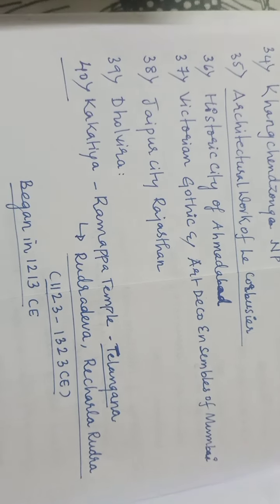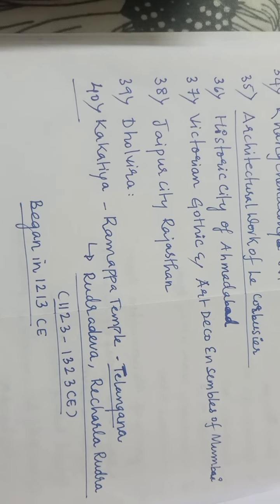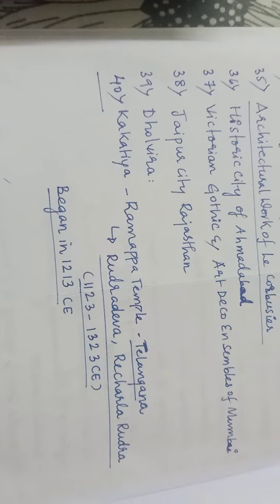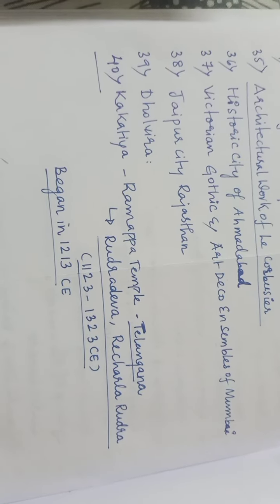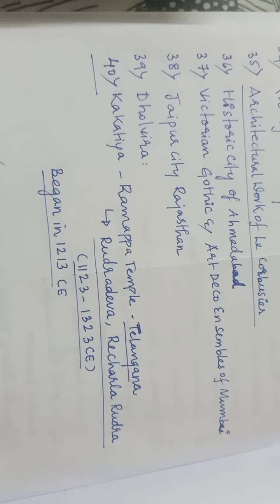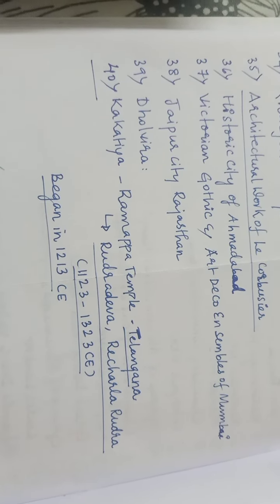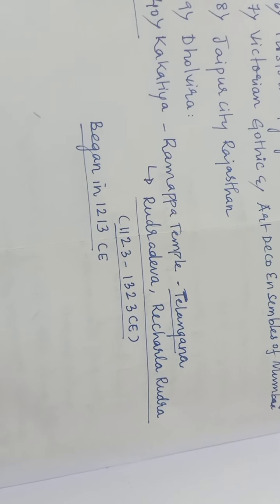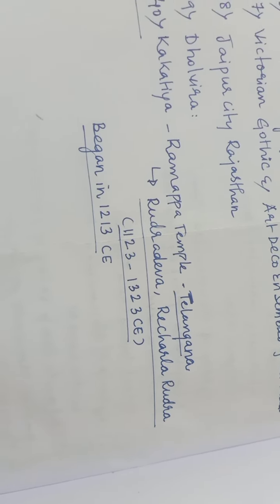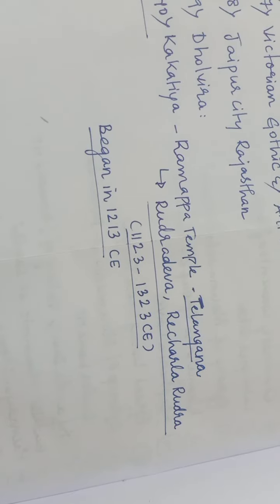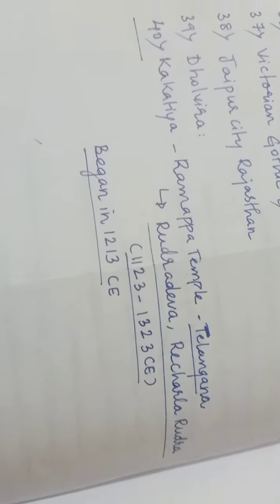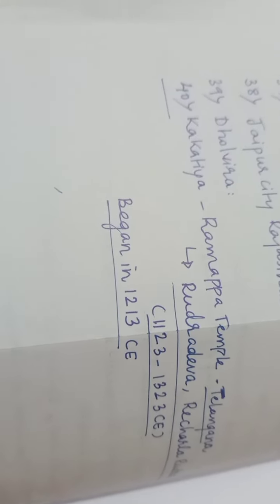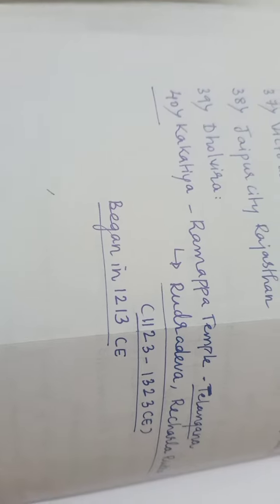Dholavira, which is one of the Harappan sites, and the recent one is the Ramappa Temple, which was built by the Kakatiya dynasty by Rudra and Recharla Rudra from 1123 to 1323 CE. Thank you.